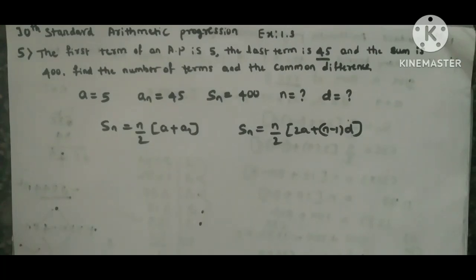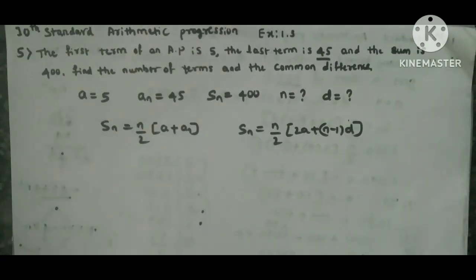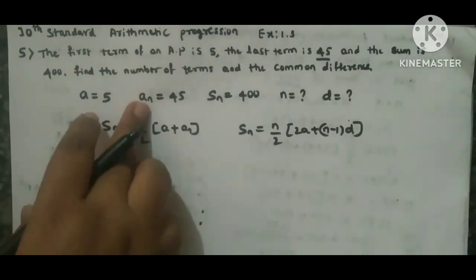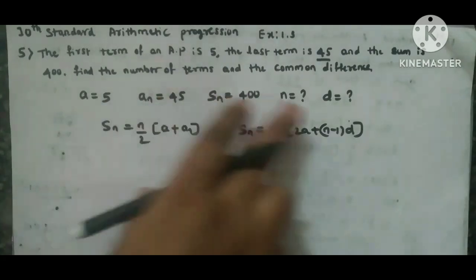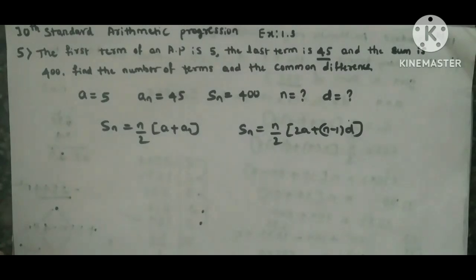If they are there, it is difficult to find. Either you have to take one more equation and substitute. So better we have to go for this equation and find the value of n, then using n, a, and an we can go for an formula and find d value. So now I will find n value using Sn formula.